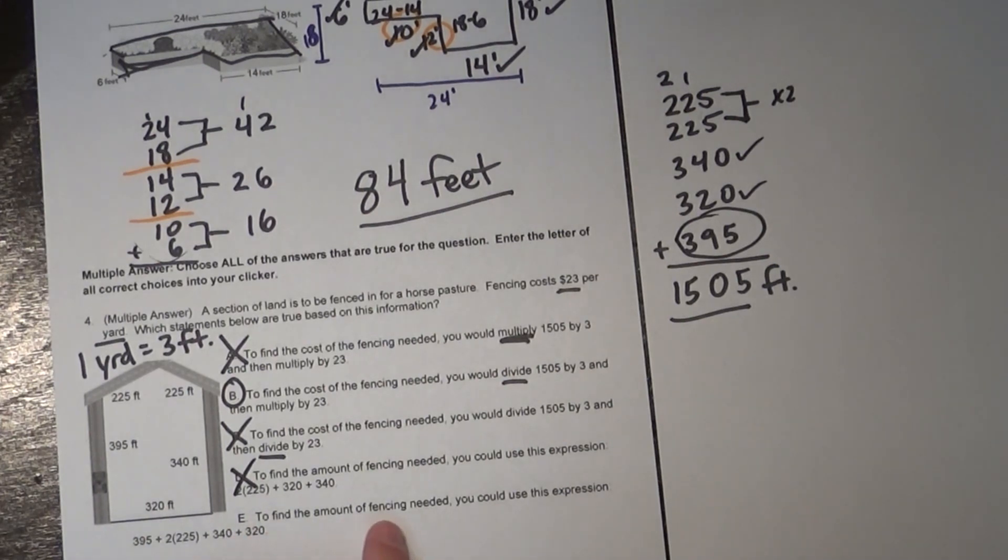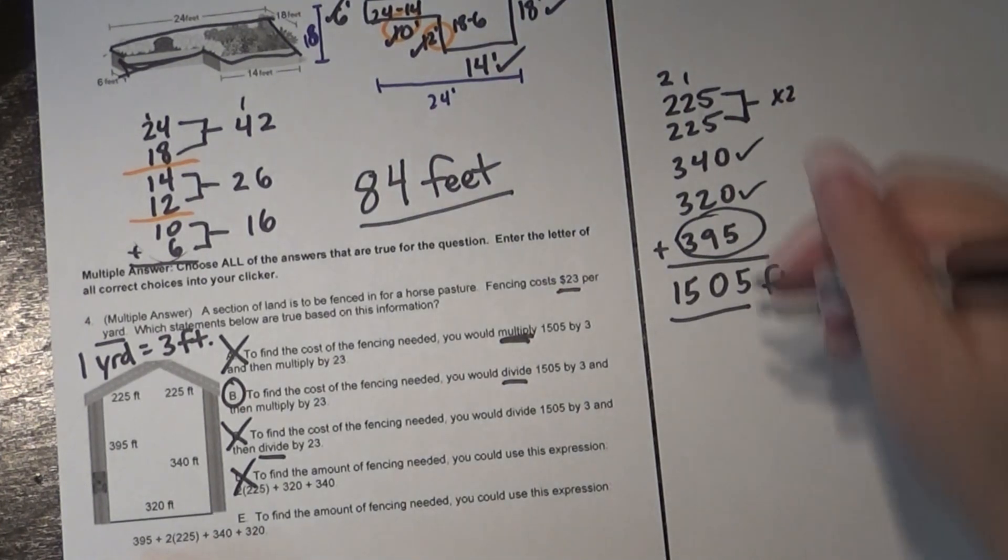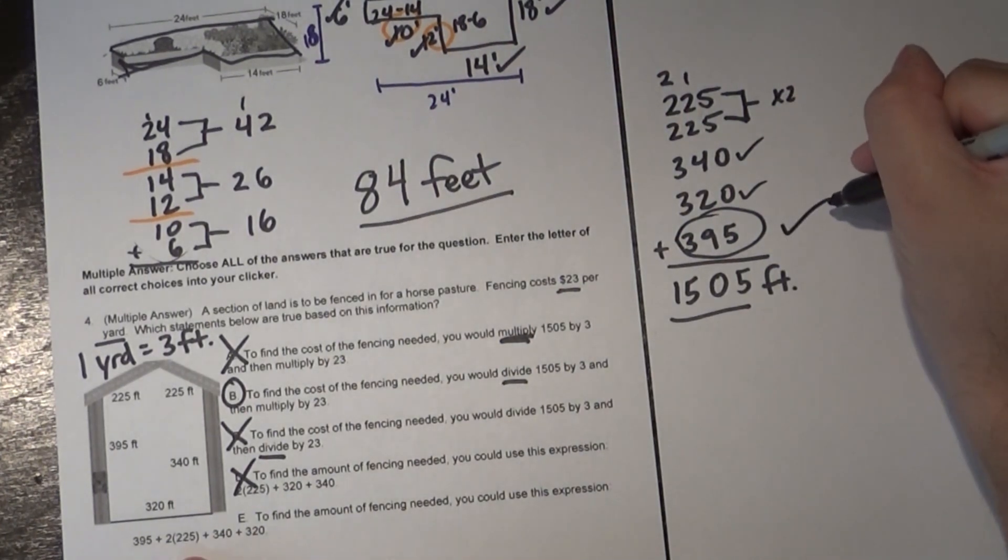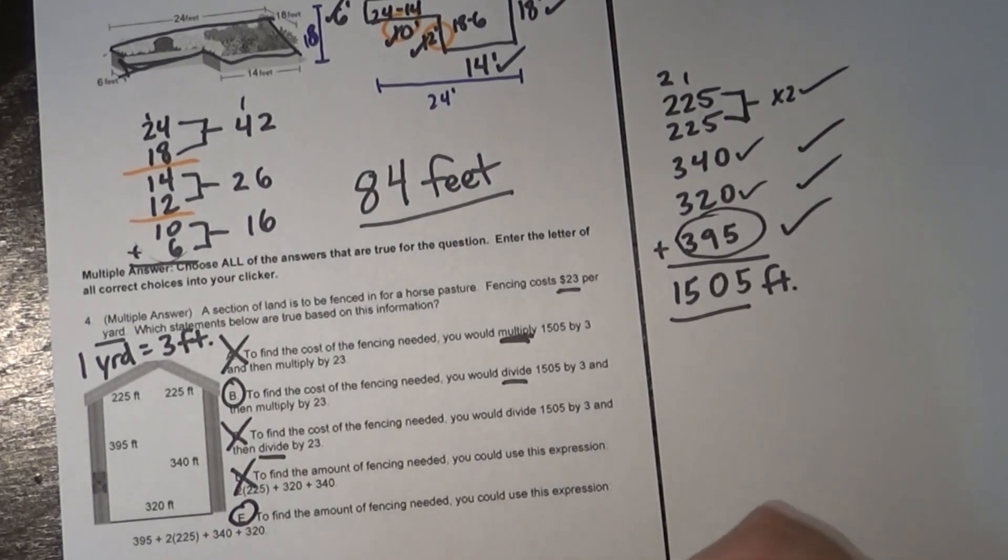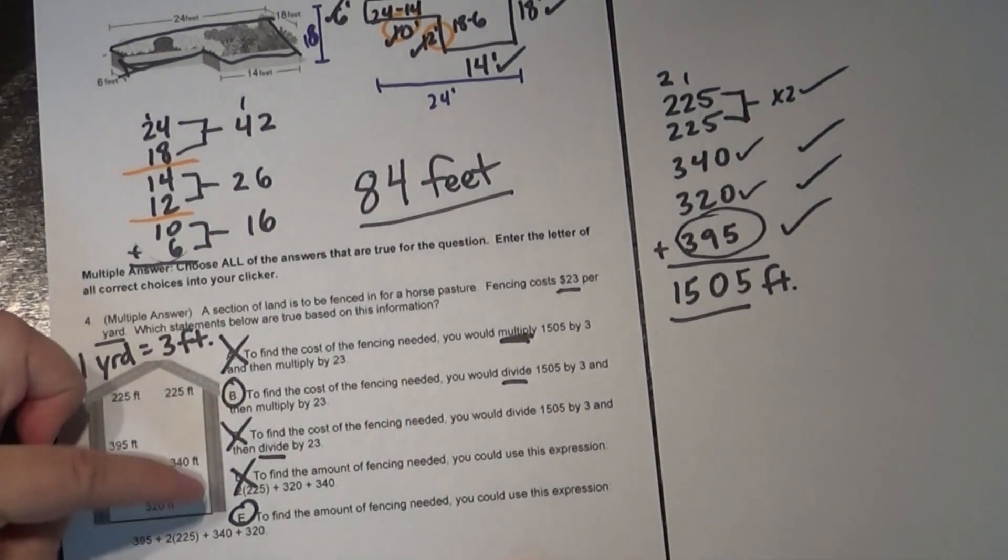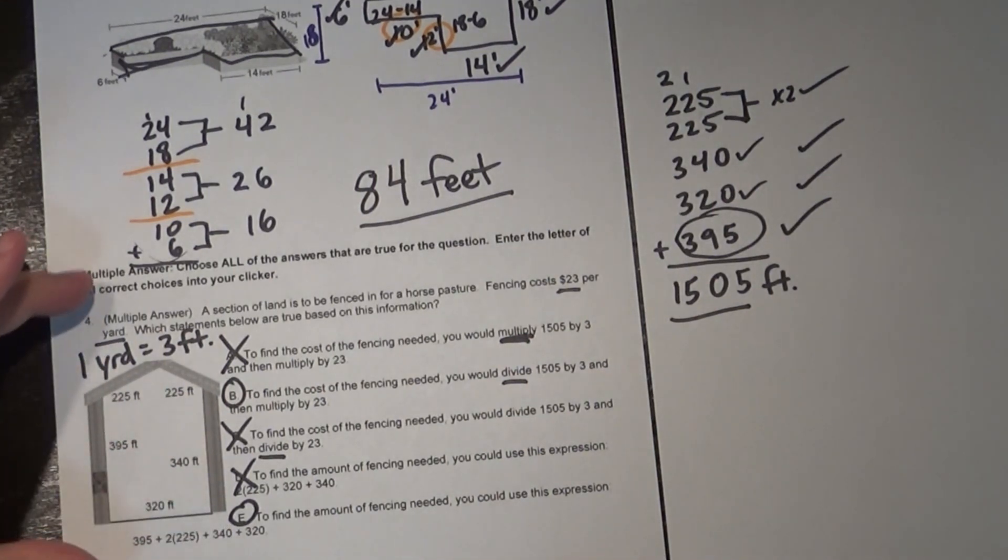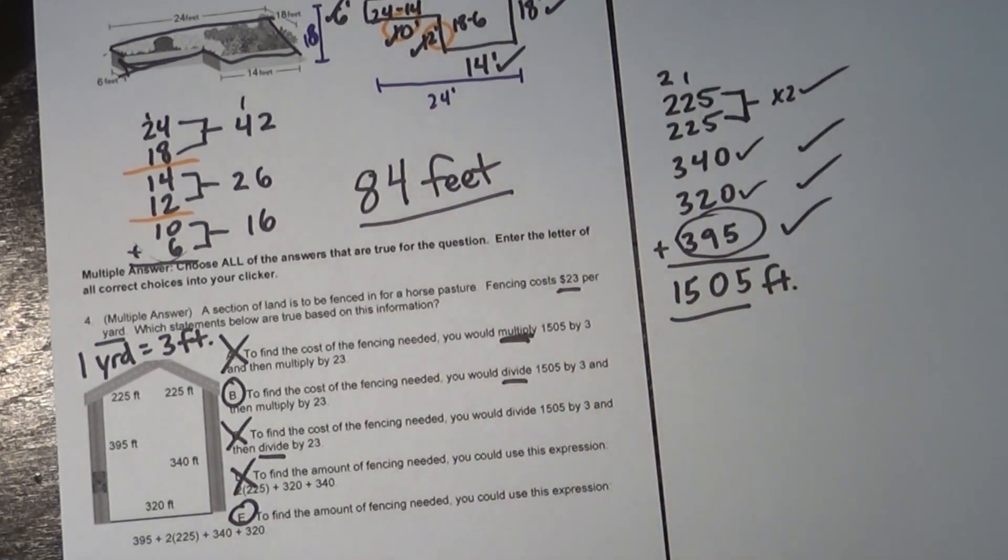Here's another one though. To find the amount of fencing needed you could use this expression: 395. Let's see. We've got it. Two times 225, got it. 340, got it. And 320, got it. So letter E works in that situation and that would be a correct answer. So my only correct answers here are B and E. But it's important to go through each option and make sure that they are definitely correct or definitely incorrect. Alright.